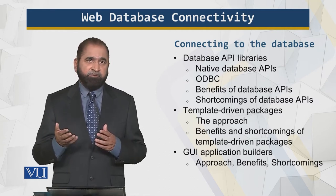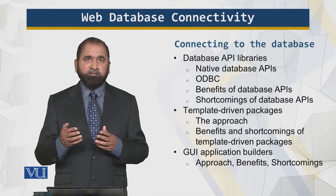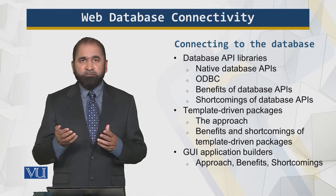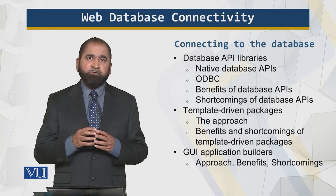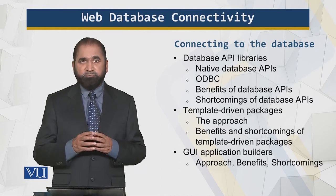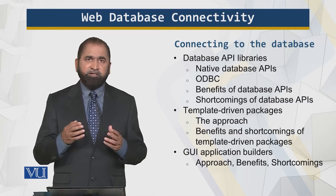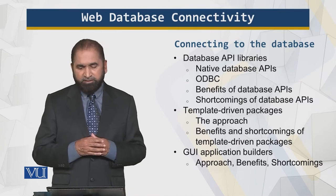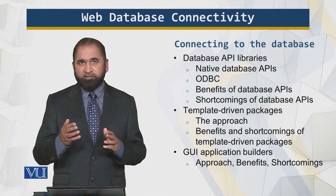We have native APIs — application programming interfaces — which are associated with a certain ecosystem, a certain vendor, a certain company. Then we have ODBC, Open Database Connectivity, which was spearheaded by Microsoft. It allows installing certain components at the client end to enable connectivity with databases such as SQL Server and even Oracle. The main benefit is performance, and the shortcoming is the proprietary nature of the architecture.